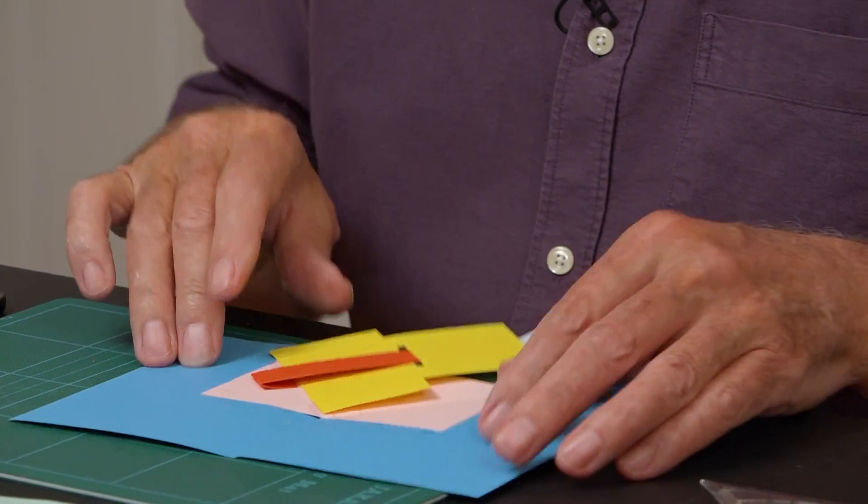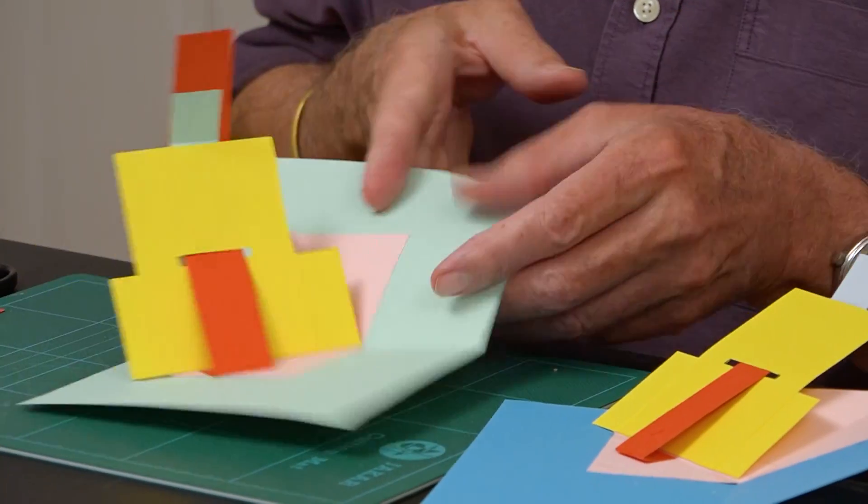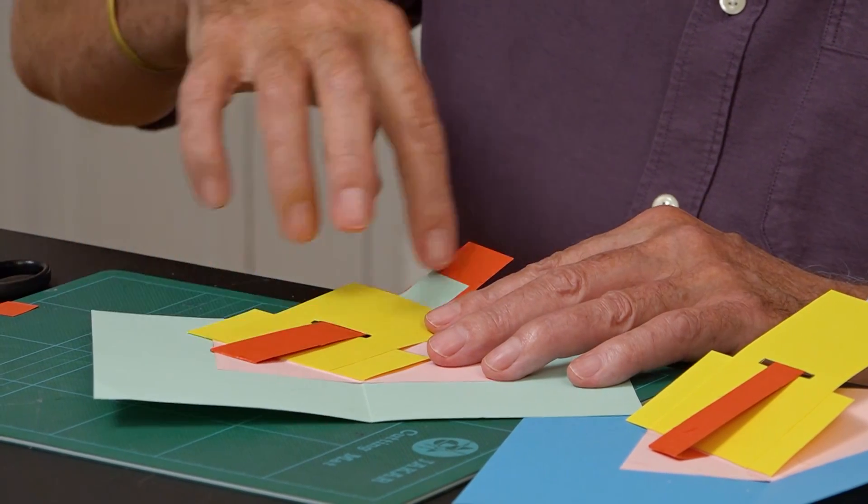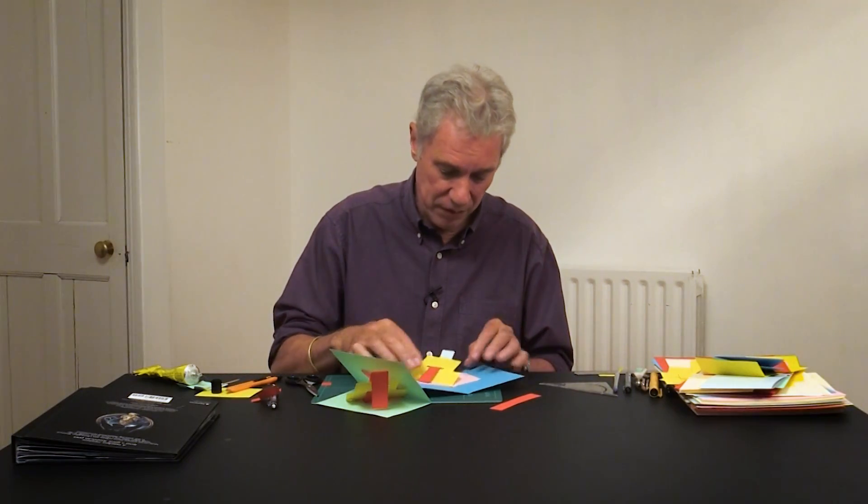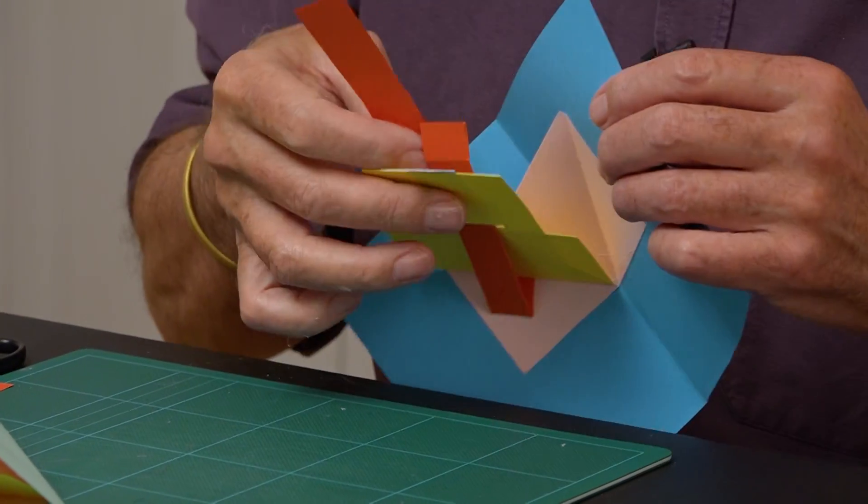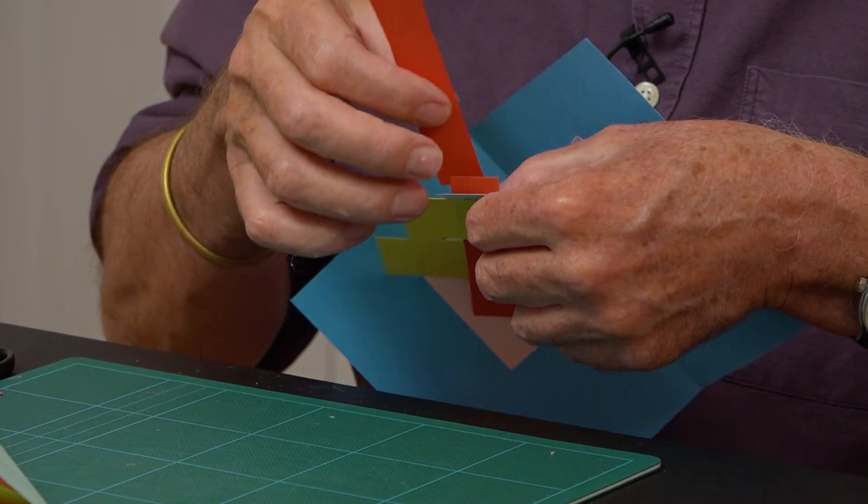Now, when the base is flat, the whole finger is flat. So I'm going to make this flat. This is the piece I'm going to add on. It's going to stick onto this and this.